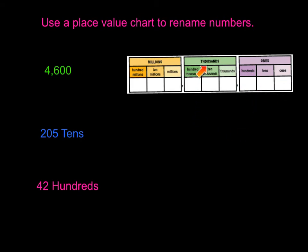We then have our thousands period, which has thousands, ten thousands, hundred thousands. And then we have our millions period, which has millions, tens of millions, and hundreds of millions.